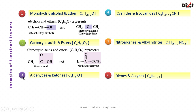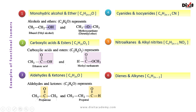Example 3: aldehydes and ketones. Both are represented by the same general formula CnH2nO. In ketones the functional group is carbonyl; in aldehydes the functional group is the formyl group. The molecular formula C3H6O represents propanone and propanal — they are functional isomers of each other.